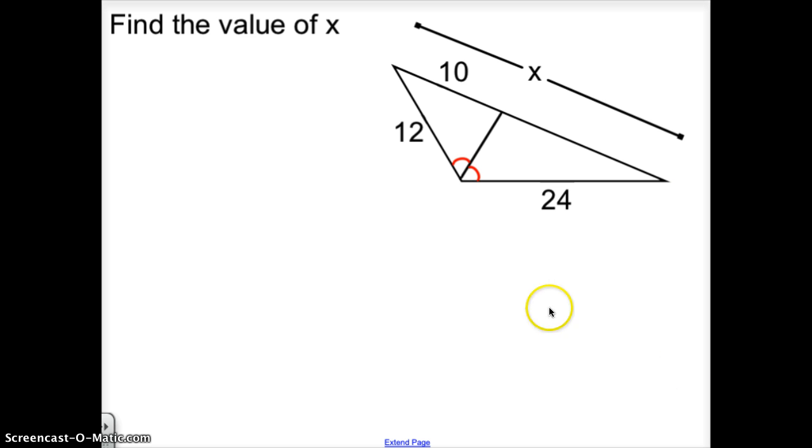Find the value of X. Hopefully, you found that the segment that after the angle bisector was created, that the segment is 12. Therefore, X would be the length of the two segments combined, and X would equal 22.